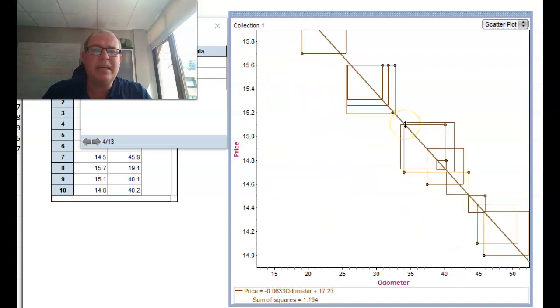What I want you to do now is try and get the best line possible. You can make it bad but try and get the best line possible by moving it around. I've got 1.194. I'm going to stick with that. See if you can beat me. See if you can get lower than 1.194.